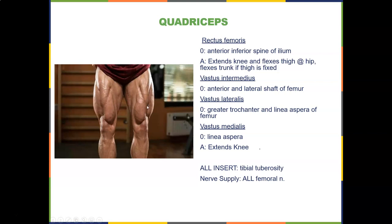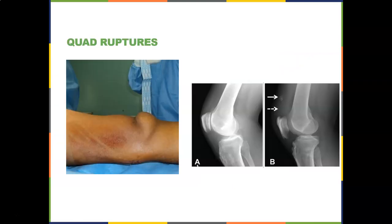The vastus intermedius is deep to the rectus femoris and originates on the anterior and lateral shaft of the femur. The vastus lateralis originates on the greater trochanter and linea aspera. The vastus medialis originates on the linea aspera. All the vastus muscles extend the knee, share a common insertion at the tibial tuberosity, and are all innervated by the femoral nerve.